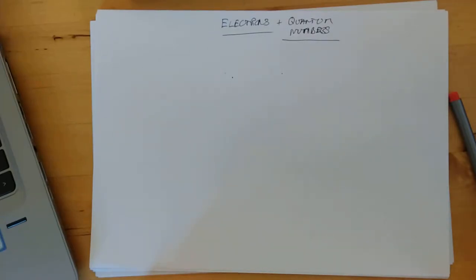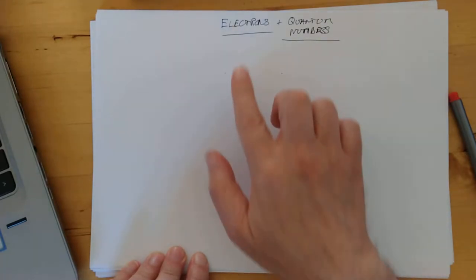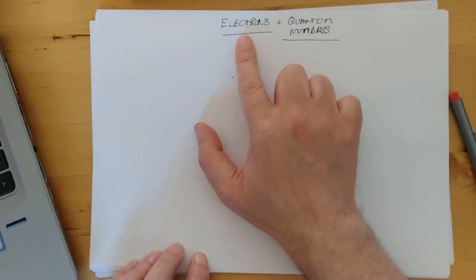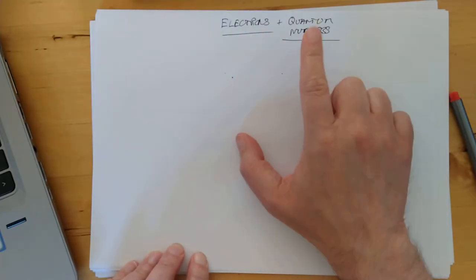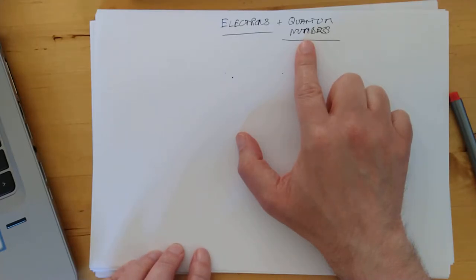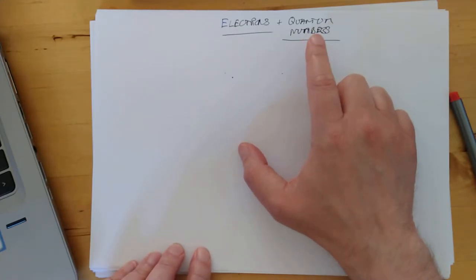Right folks, welcome back to Advanced Higher Chemistry. We've transitioned from electromagnetic spectrum and waves into electrons and quantum numbers, whatever they might be. Hopefully, by the time we're finished in 10 minutes' time, you'll know. Well, that's the goal.